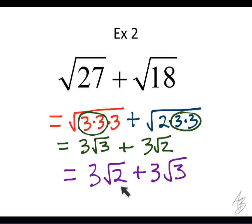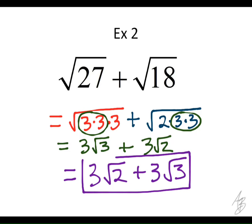There is one more thing I want to do before I put a box around my answer — this is not quite finished. We need to put it in order. Since 2 is smaller than 3, we want this term to go first. So this is equal to 3 square root of 2 plus 3 square root of 3, getting the radicands in increasing order from smallest to biggest.